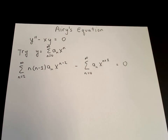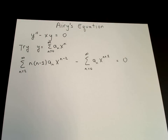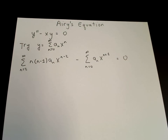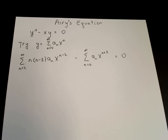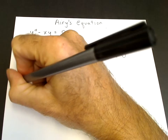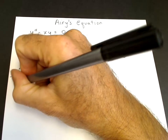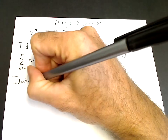Now we want to write this as a single power series. We need to shift indices so that both terms look like a power series with x to the n.